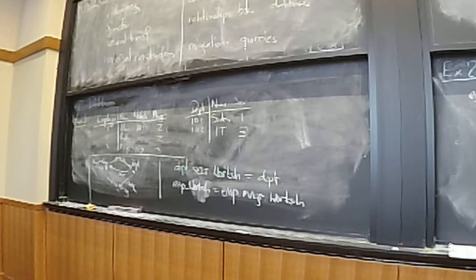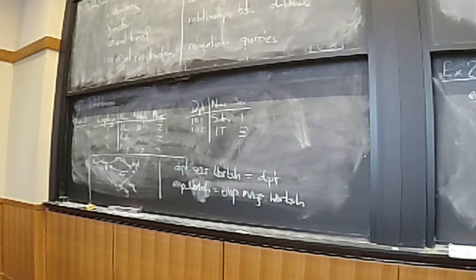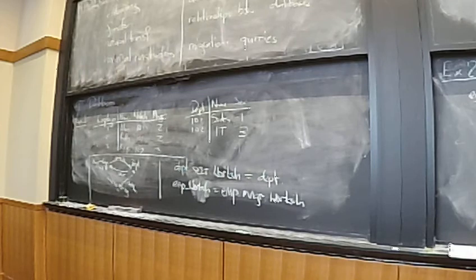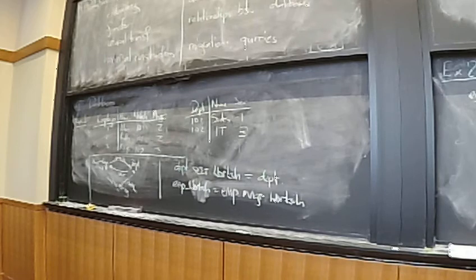Say we've sold two economy tickets. They have a price — $50 — and a seat position, say 10A and 15B. Similarly, we sold one first class ticket for $500, and that person gets to sit in the first row. So this is a system for storing data, and there's going to be a schema associated with it.